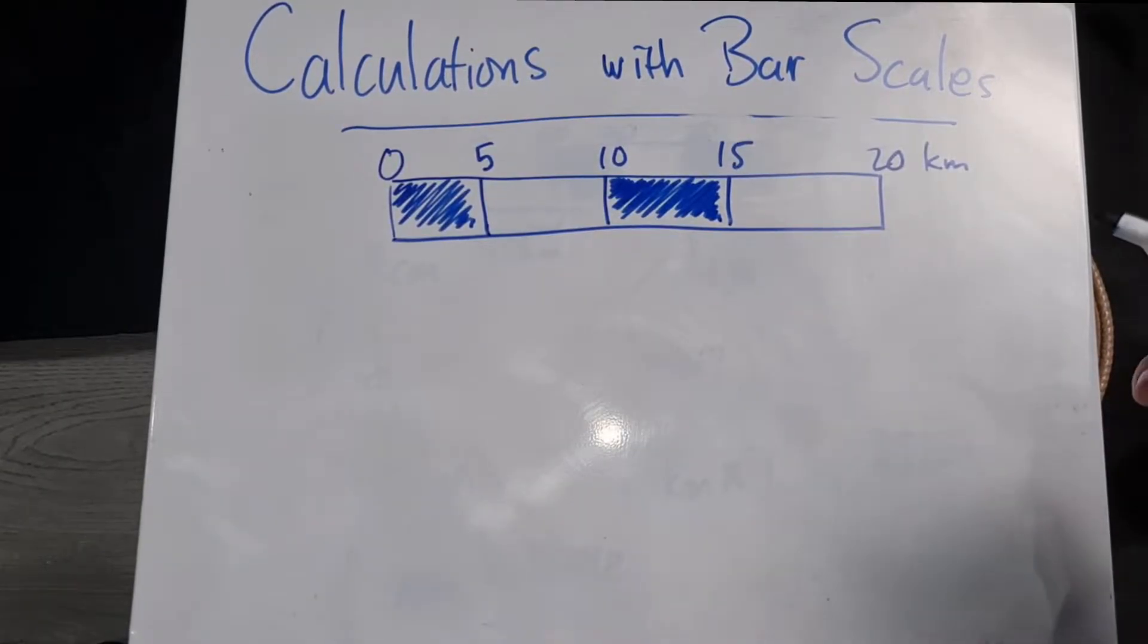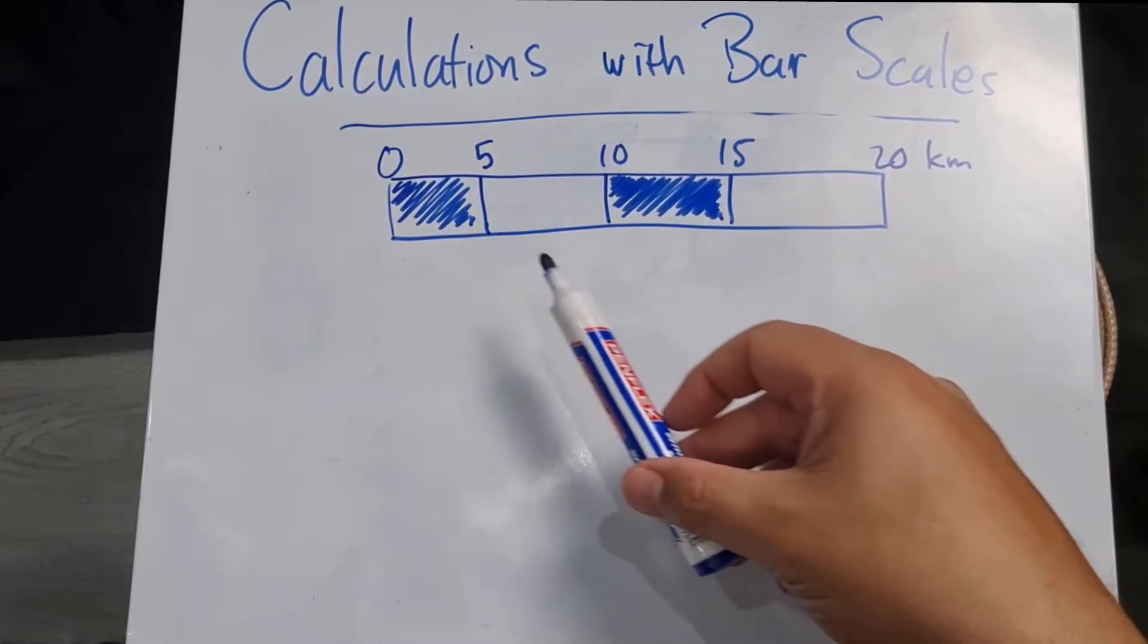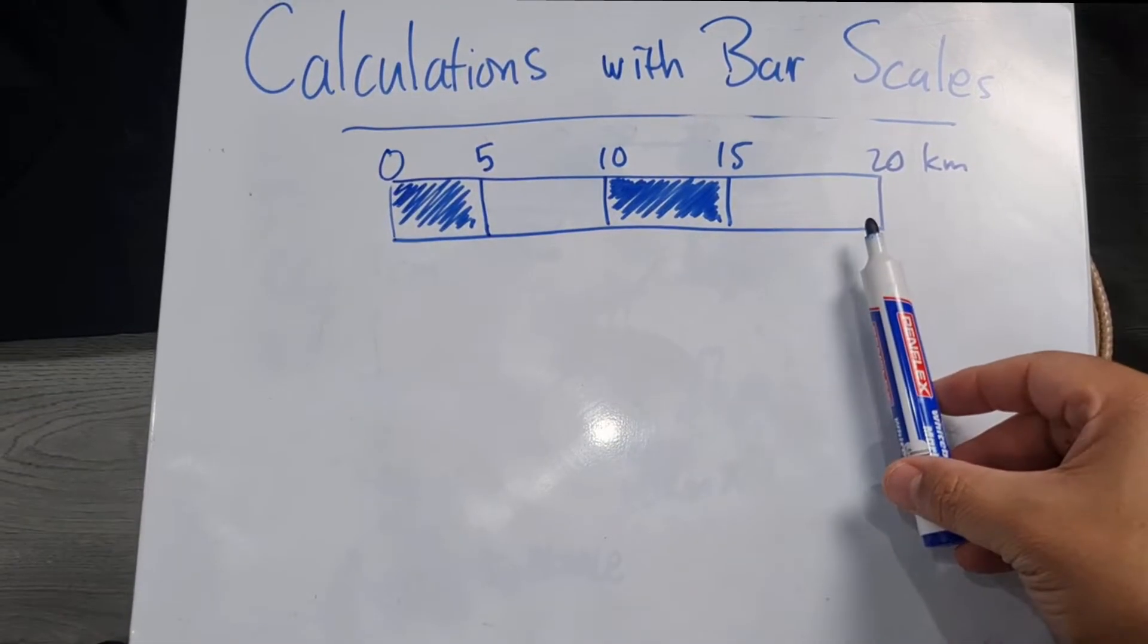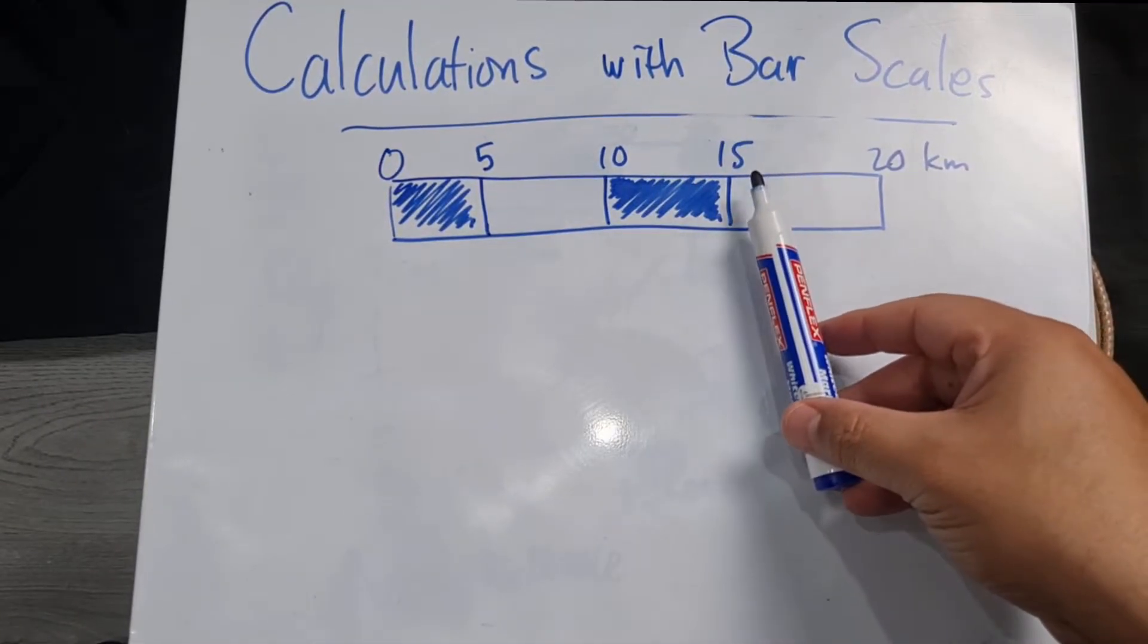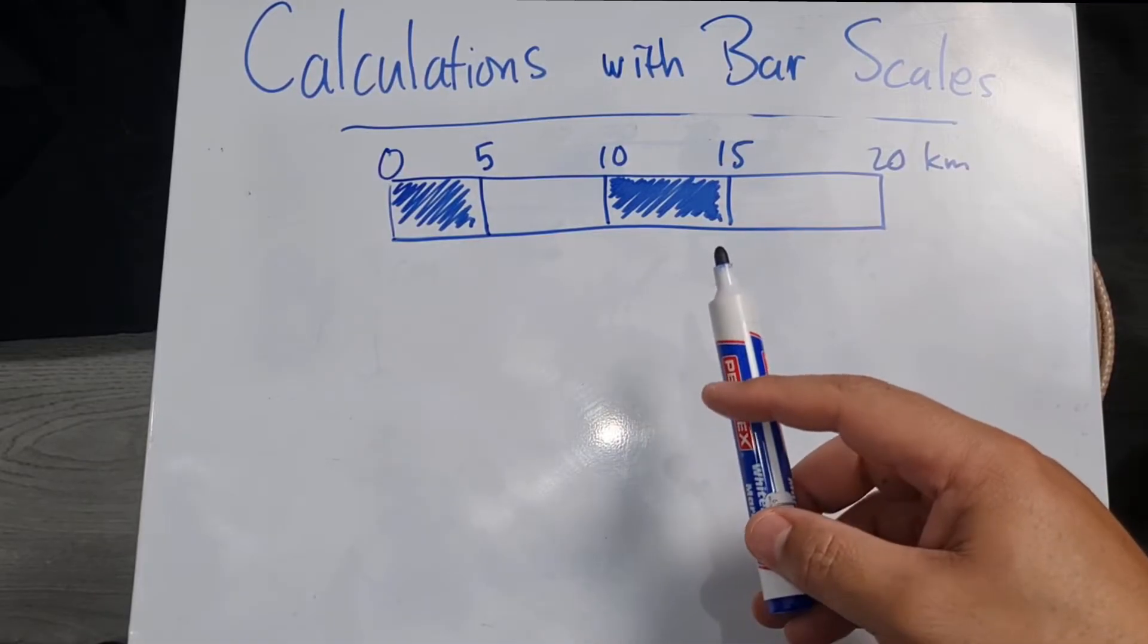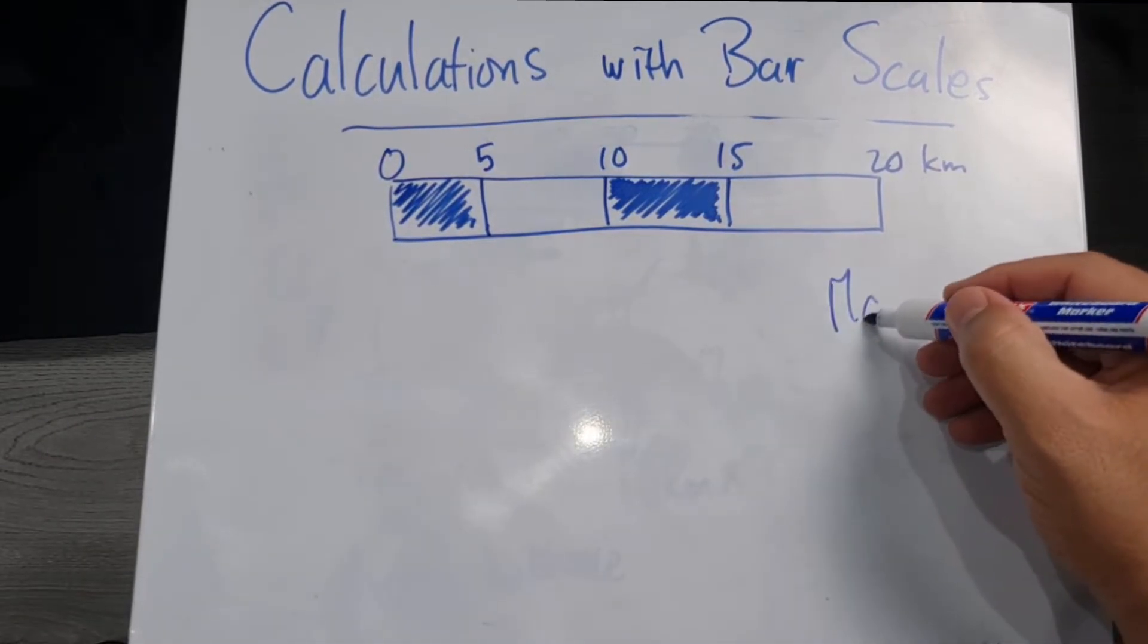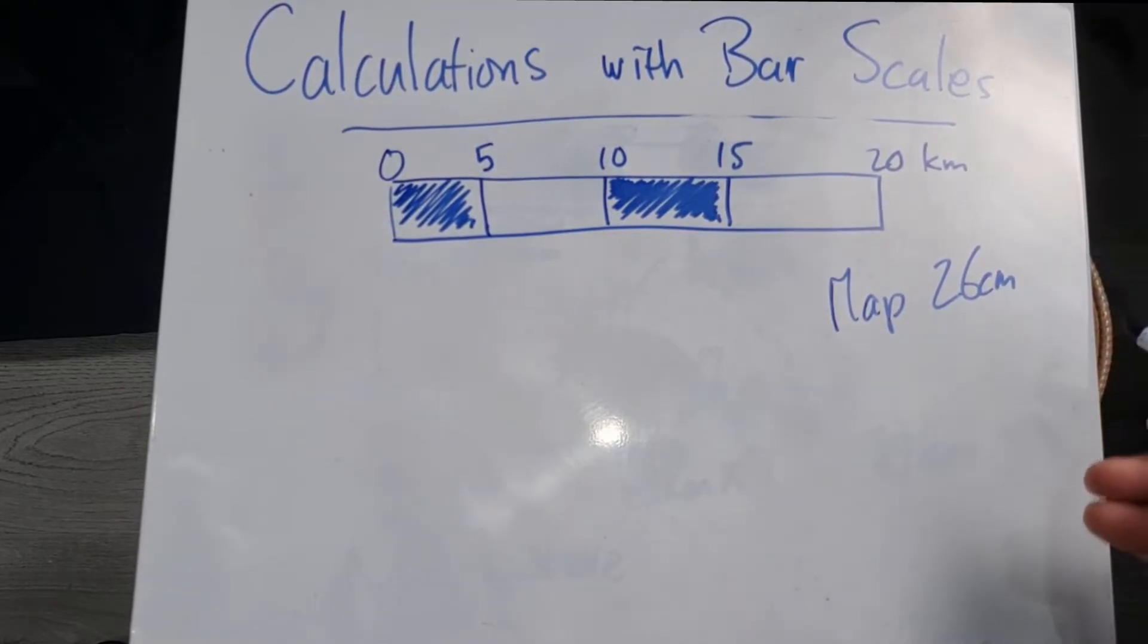Now let's look at another example. Here you can see we have a bar scale, and you'll also notice with our bar scales we have different segments. This one is going zero, five kilometers, 10 kilometers, 15 kilometers, and 20 kilometers. Now they say to us, use the bar scale, this particular one, to find the actual distance if the measurement on the map is 26 centimeters.